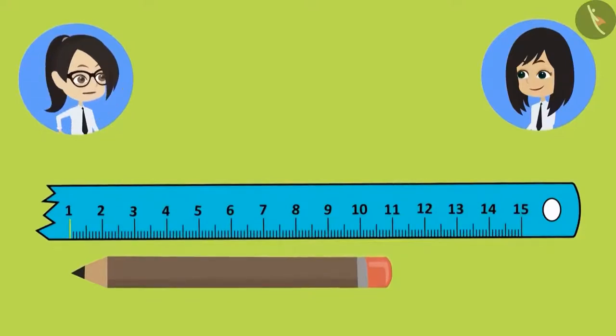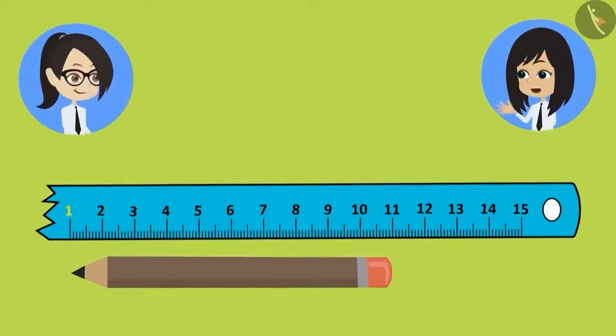We start counting from the least centimeter mark. 1, 2, 3, 4, 5, 6, 7, 8, 9, 10 and 11.